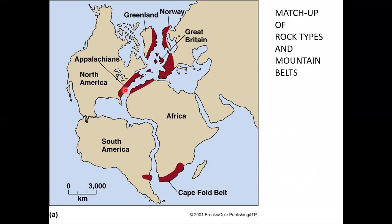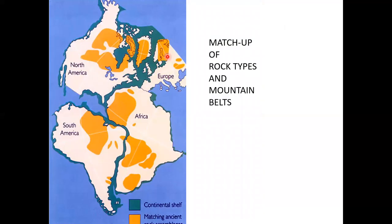For example, serpentinite is California's state rock, but there's a belt of serpentinite running through the Appalachian Mountains. The chemistry of that serpentinite exactly matches the belt of serpentinite running through Great Britain. For that to happen, it had to form at the exact same temperature and pressure — meaning it happened at the same time. That's proof these two landmasses were once together.